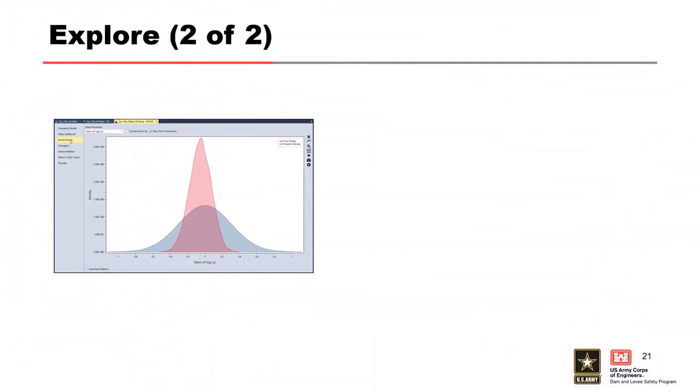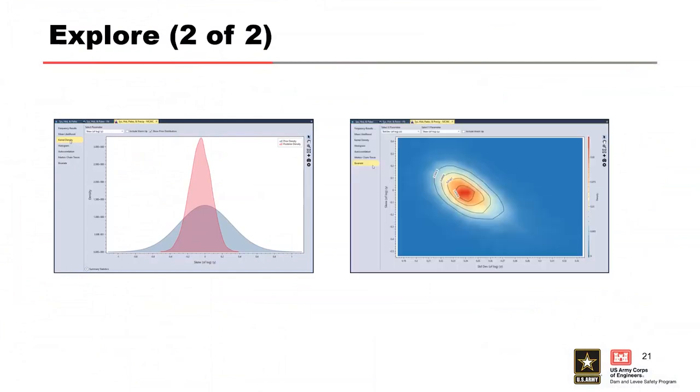Several additional exploration tools are available. Shown here is an example of a kernel density plot of the parameters, and here is a bivariate plot. The kernel density plot shows the distribution of a parameter, and the bivariate plot shows the relationship between a set of two parameters. It's hard to see, but basically it shows the skew on the y-axis and standard deviation on the x-axis, and the bigger the skew, the less standard deviation, showing the relationship.